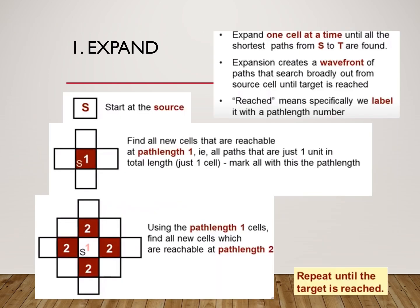What is meant by expand? We have to start from the source cell and expand one cell at a time until all the shortest paths from source S to target are found. The expansion creates a wavefront — like throwing a stone in a pond, the wave propagates outward from the center point. Similarly, we create this expansion like a wavefront of paths from the starting cell.